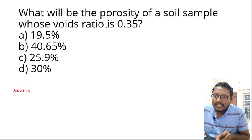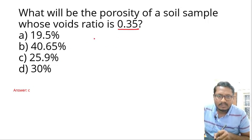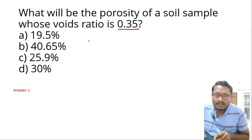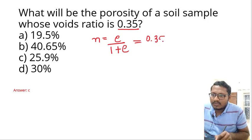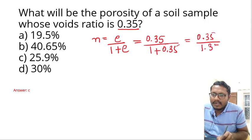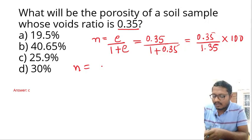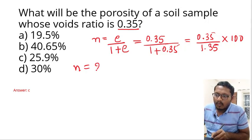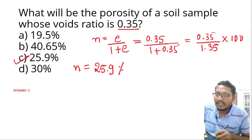The question is: what will be the porosity of a soil sample whose voids ratio is 0.35? This is a numerical question where we must know the formula for porosity and voids ratio. The formula is: porosity N equals e upon 1 plus e. Substituting e = 0.35: N = 0.35 divided by 1.35 into 100, which gives N = 25.9 percent. The correct answer is option C, that is 25.9 percent.